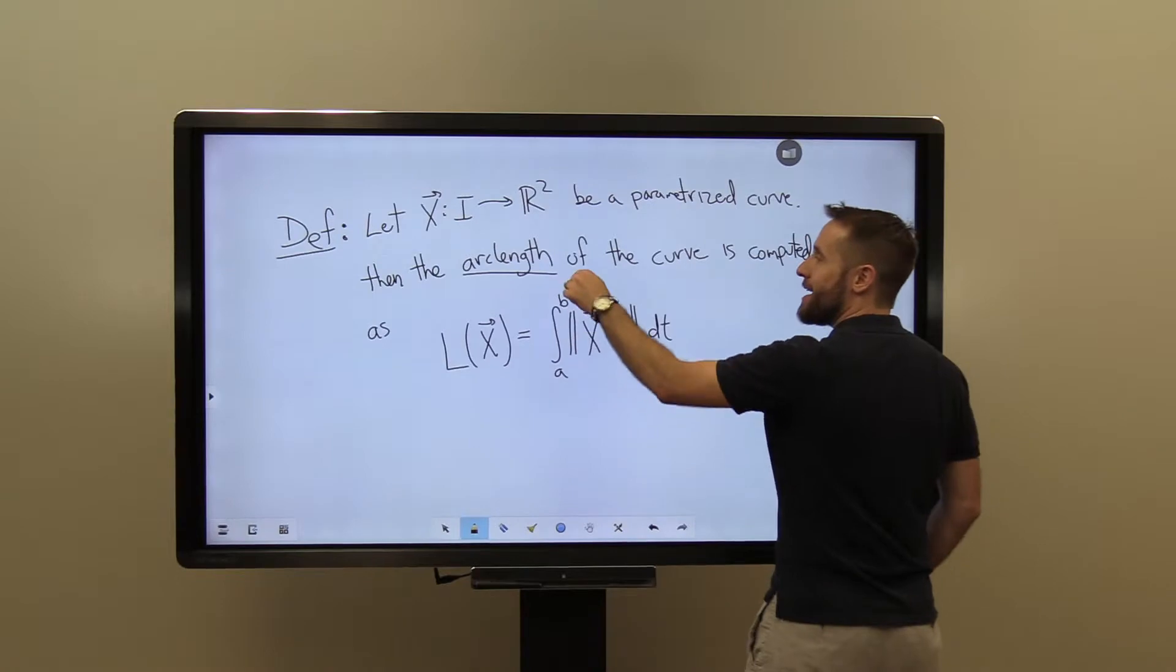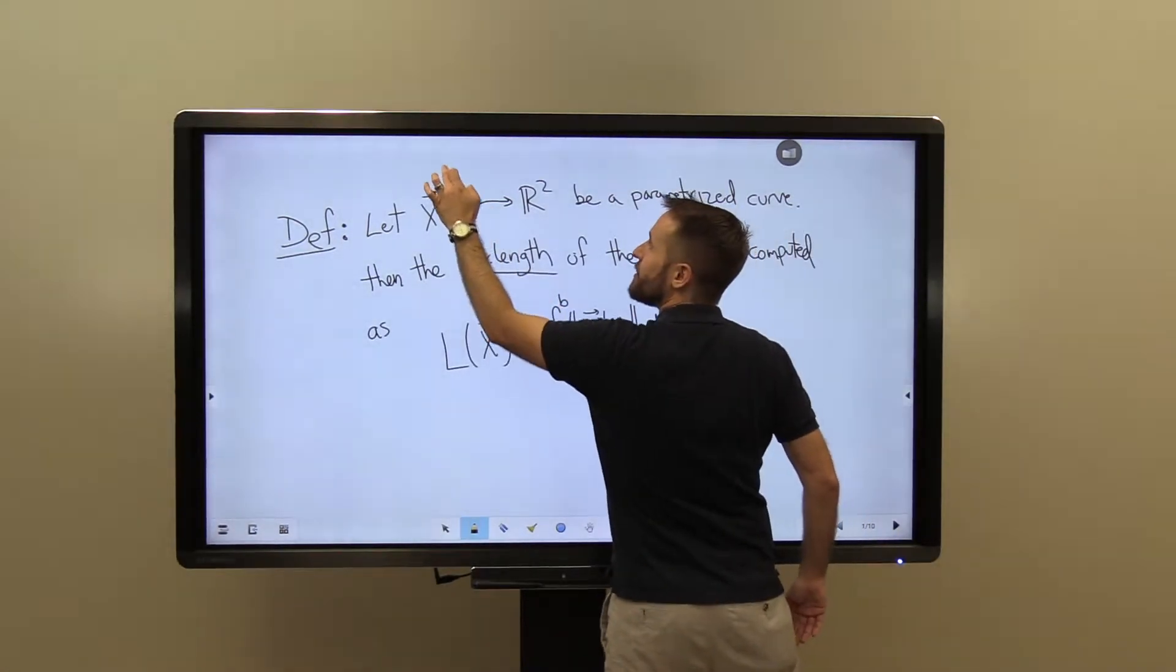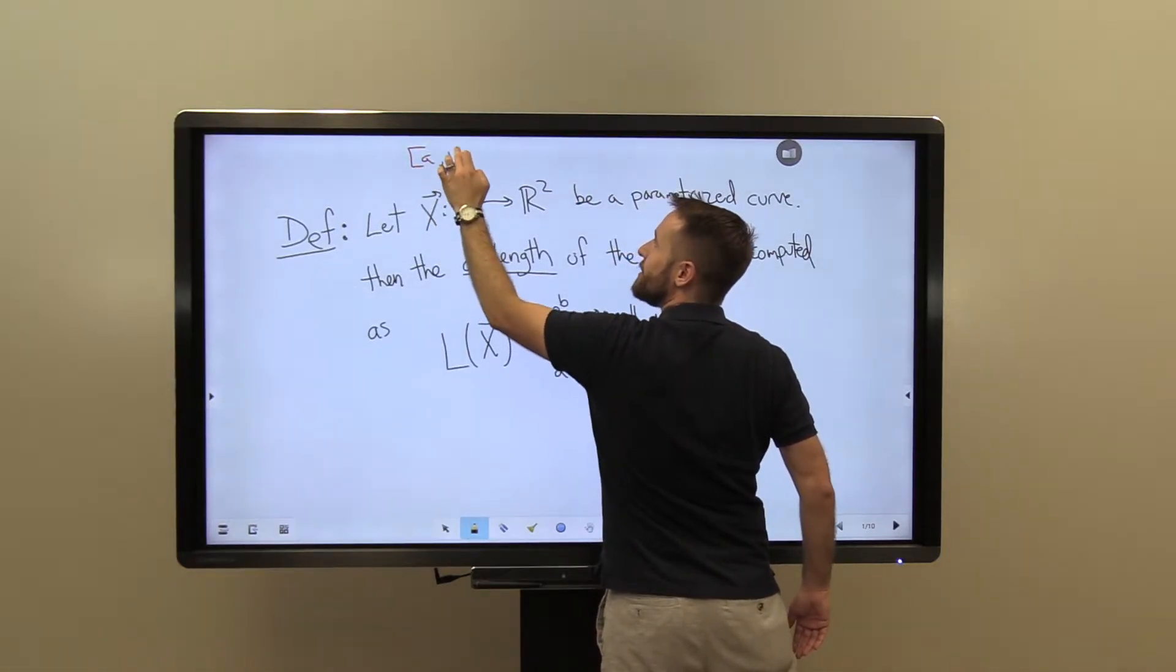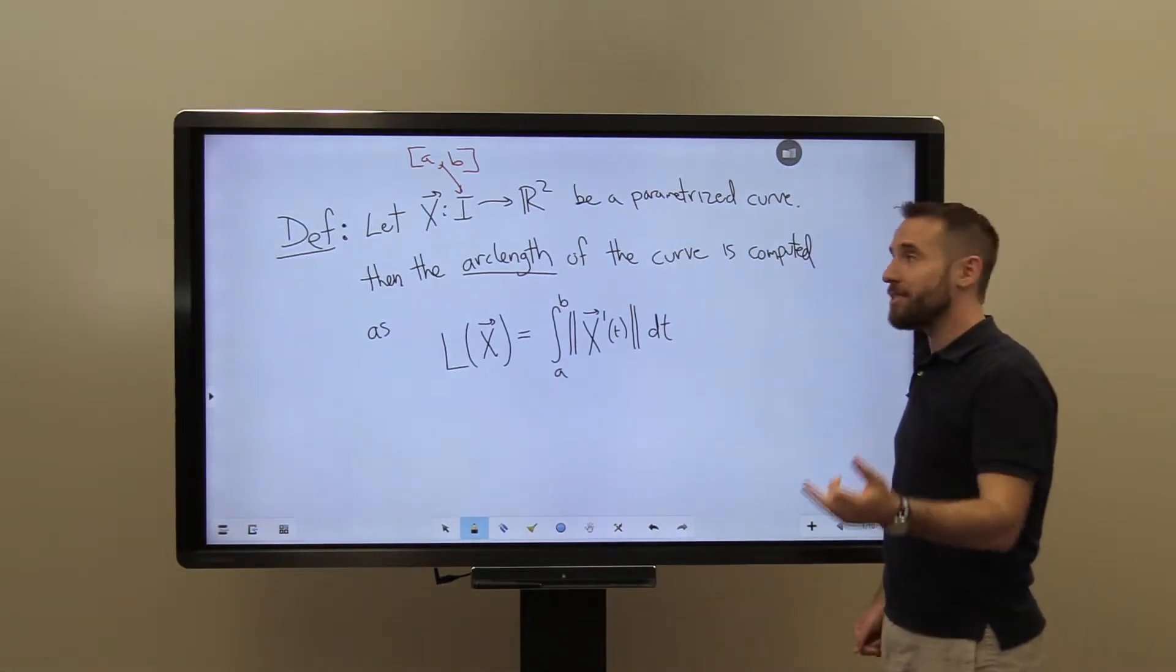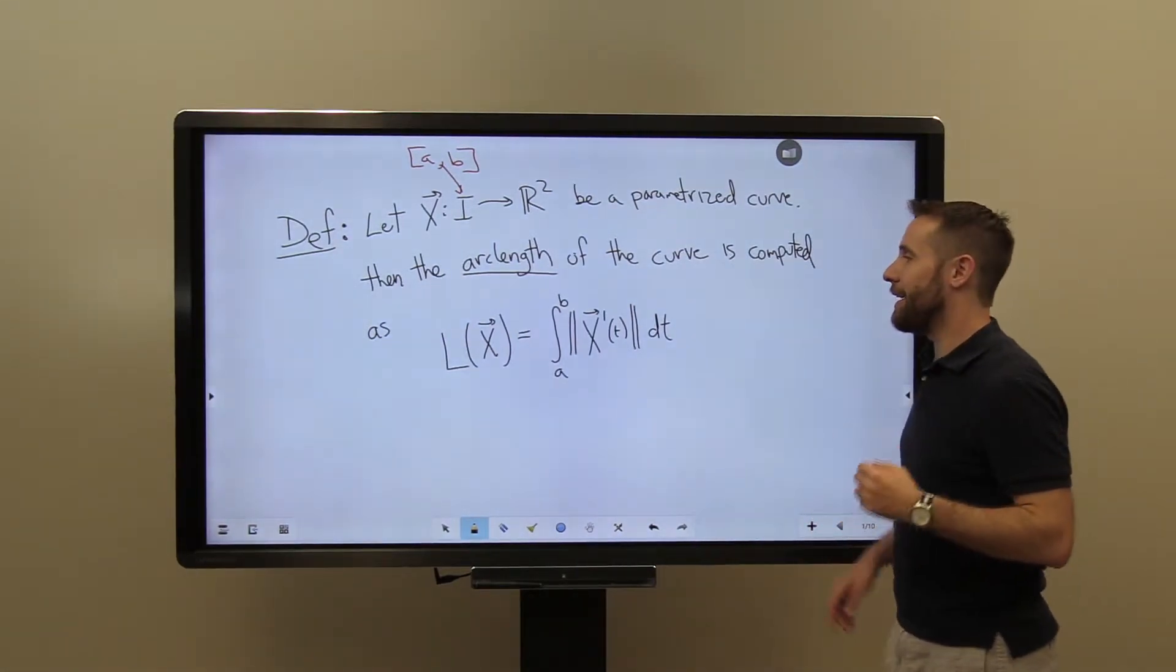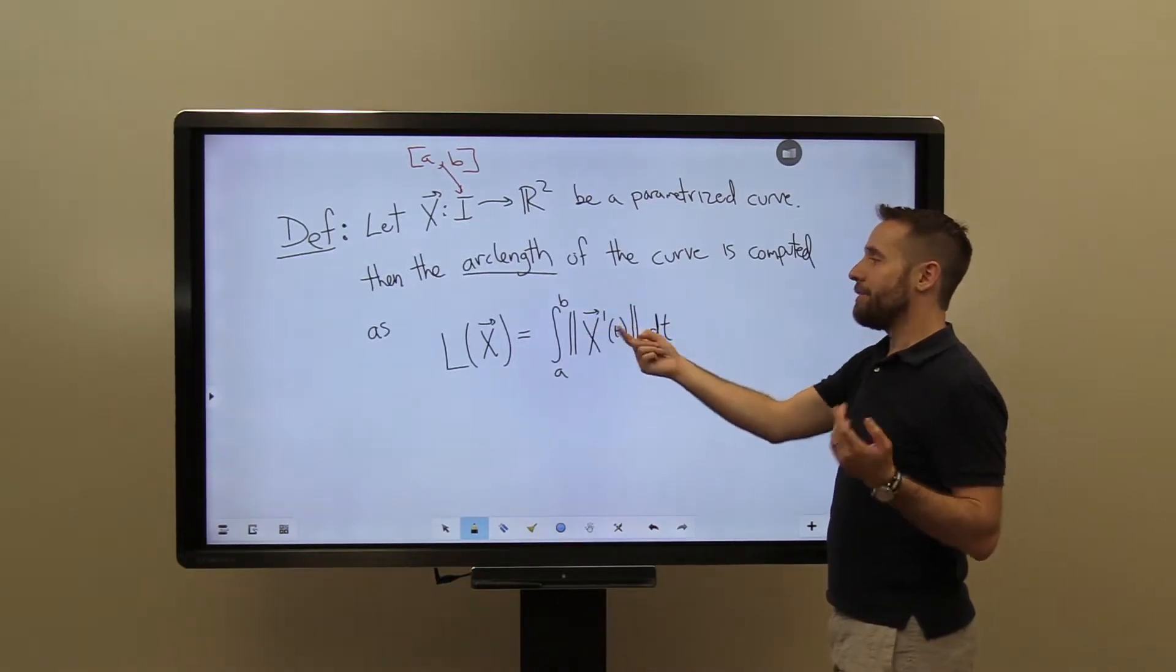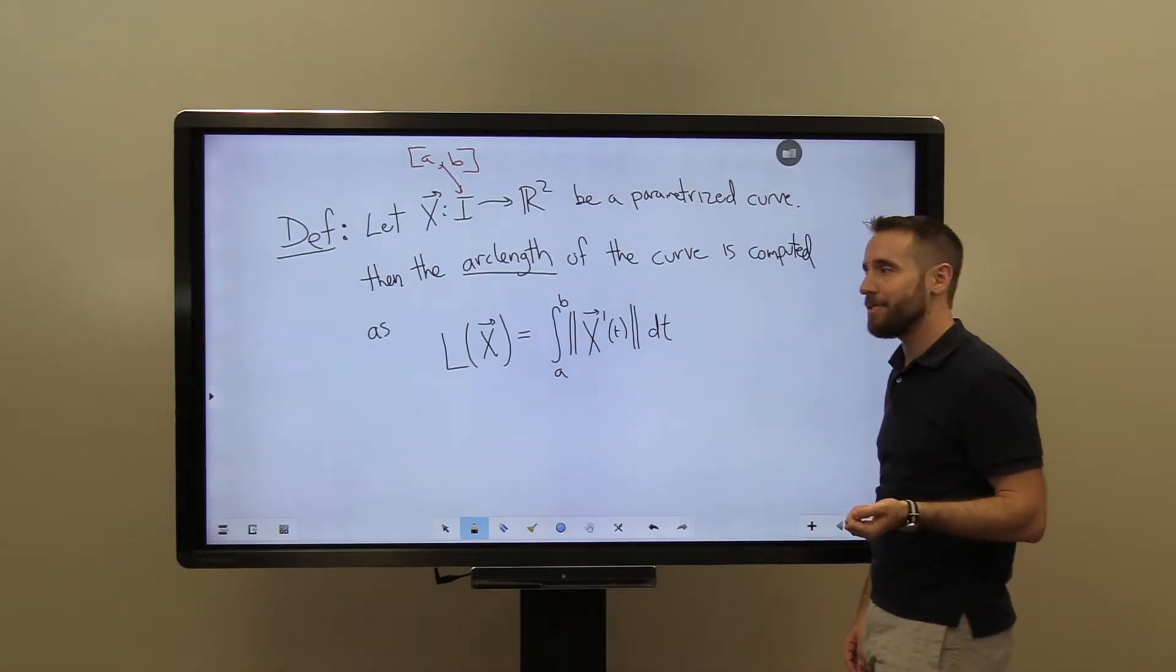So to quickly clarify this, the a and b, those are the endpoints of our interval of time. So that was, our interval here was really just the interval a to b, like this. And so with those two moments in time sort of identified, then our total length is an integral from a to b of the norm of x prime of t dt.